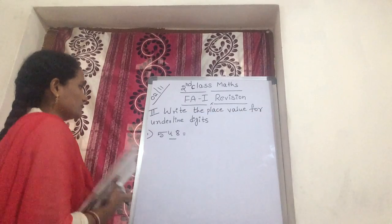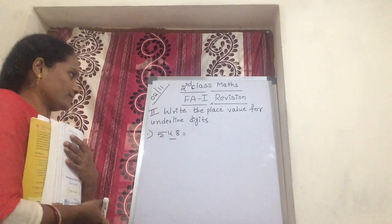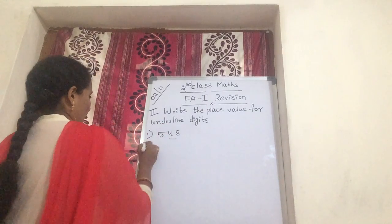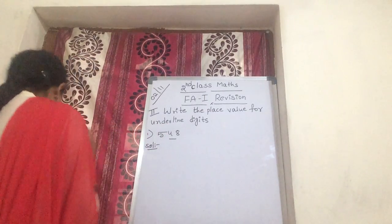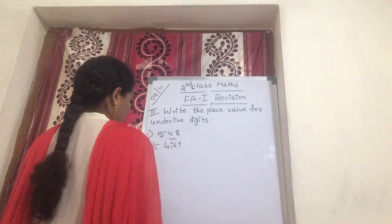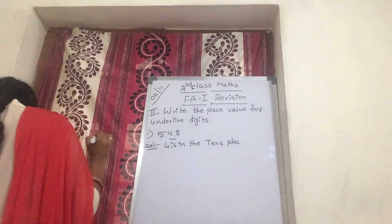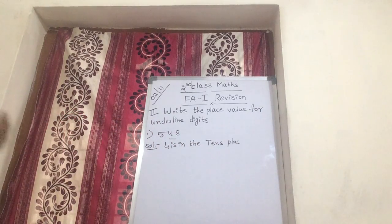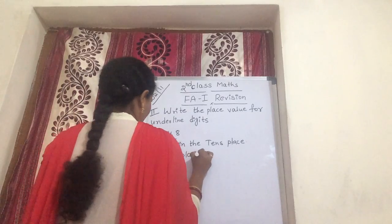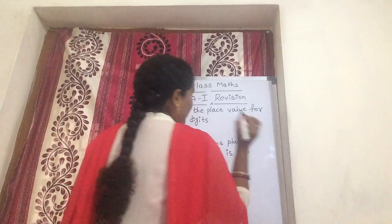First one is 540, underline on 4. What is the place value of 4? 4 is in the tens place. So its place value is 40.